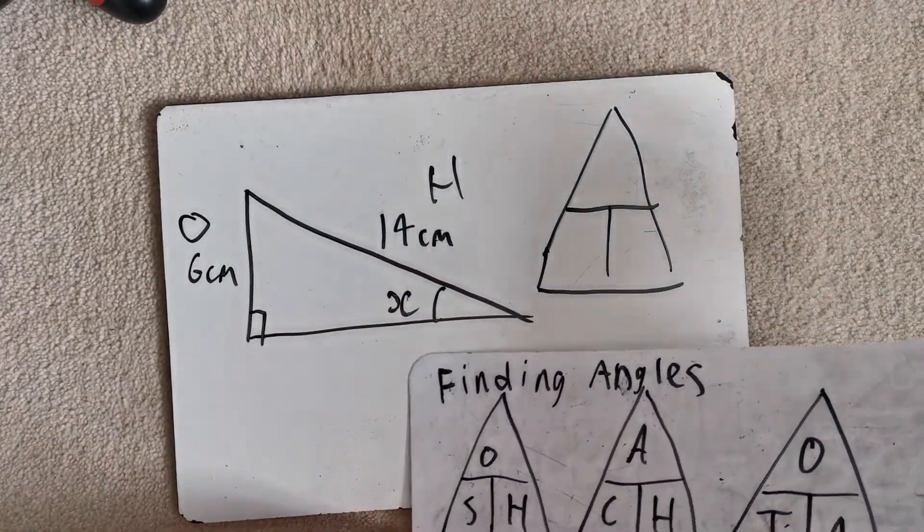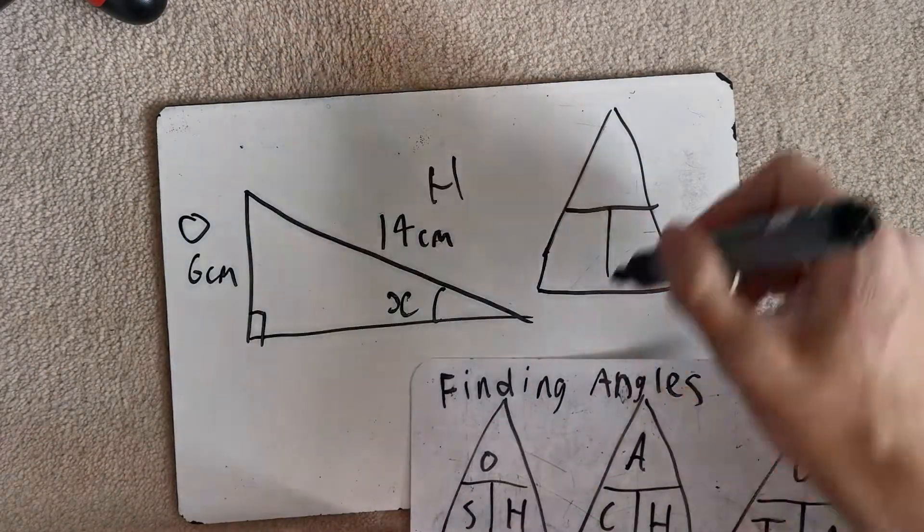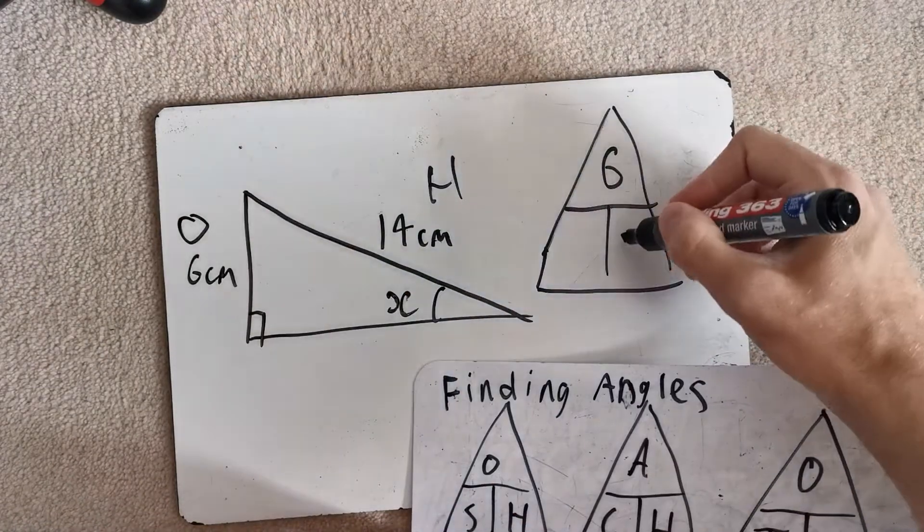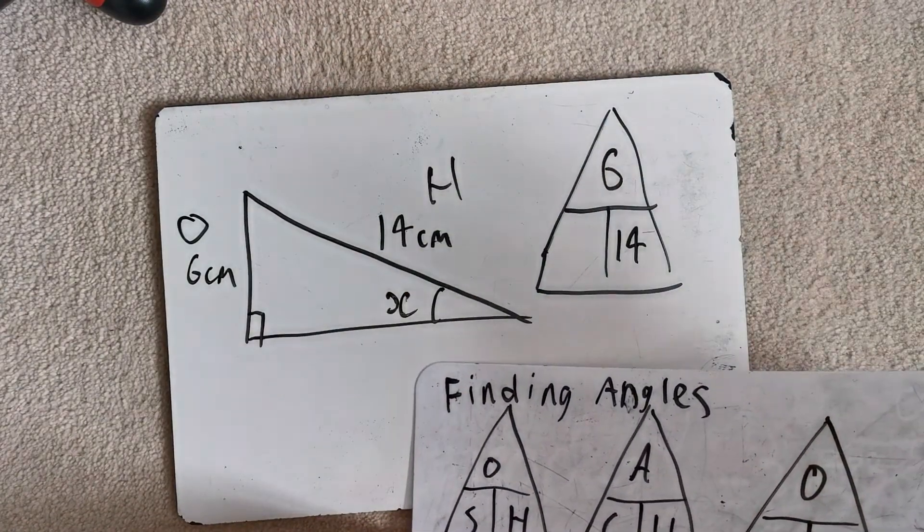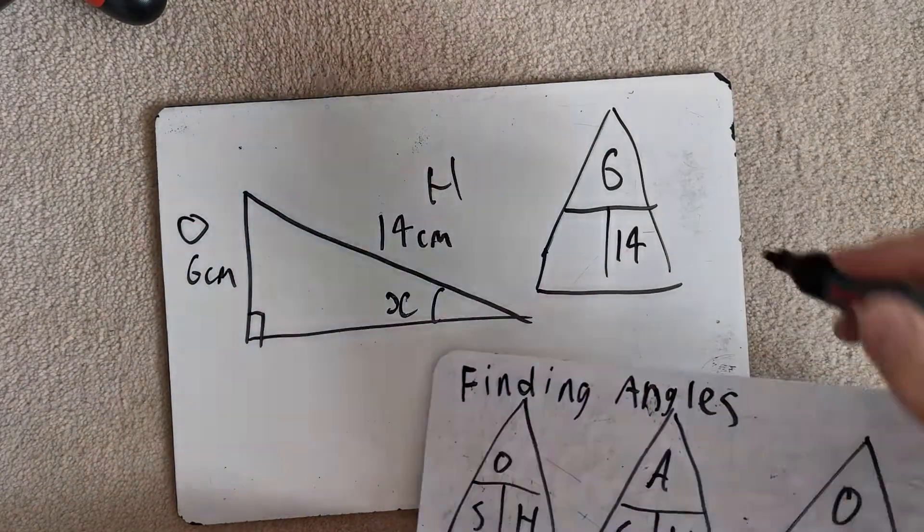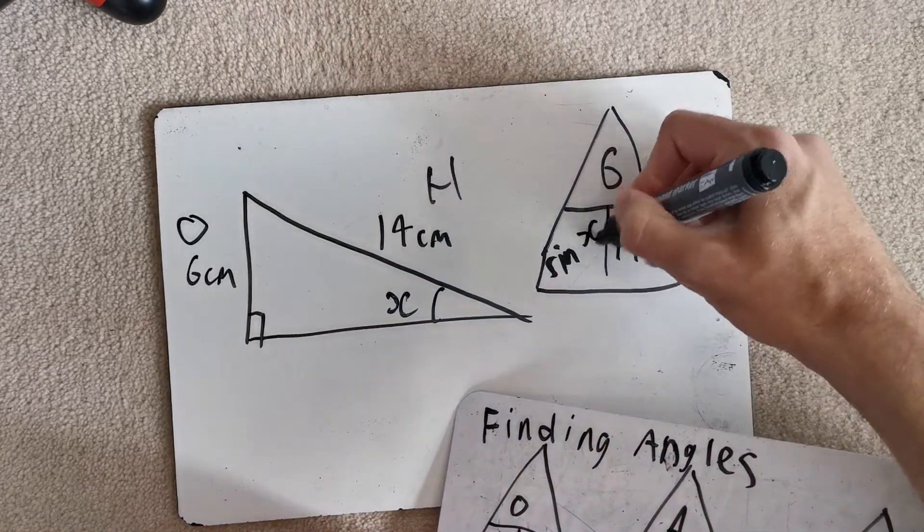Opposite goes on top, so there's our opposite, the six, so the opposite goes on top. Hypotenuse, 14, goes there. And this one, remember, it's S. That means sine of our angle.